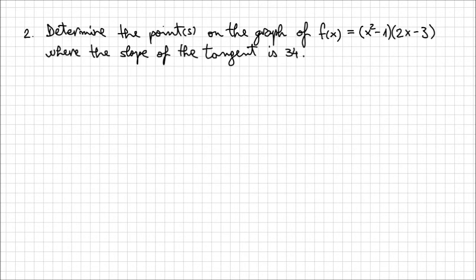Where the slope of the tangent is 34. So you see, we encounter the same elements. We have a function and we are looking for the points where the slope of the tangent is given to us to have a particular value, 34 in this case.